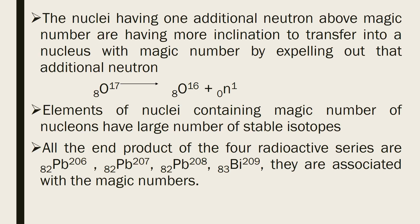The neptunium series is an artificial radioactive series, and its elements are not found naturally. The end product of the neptunium series is bismuth with Z = 83, which has a small deviation; however, the second-to-last product is lead with the magic number 82. All end products of the four radioactive series are associated with magic numbers, meaning the end product of radioactive decay always tends to attain a magic number.